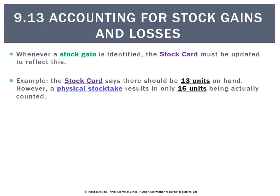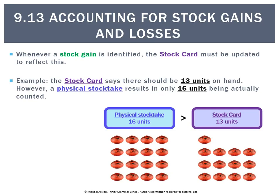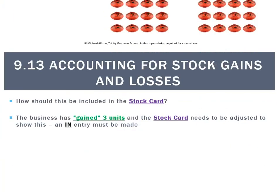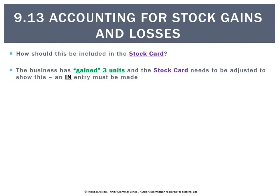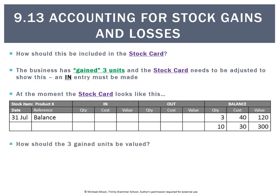What about a stock gain? Again, the stock card has to be updated. The stock card says there should only be 13 units, but we do a stock take and we count 16. We've gained 3 units, so we need to account for that. In the stock card, that will be an 'in.' Looking at the stock card, it shows 3 at $40 and 10 at $30 — that's 13 units. But we counted 16, so the question is: how do we value them? Are they valued at $40, $30, $35, or so on?